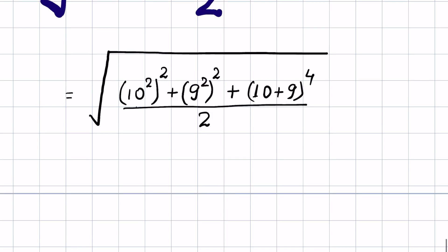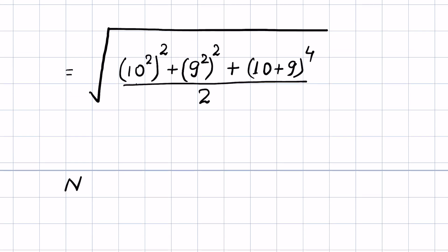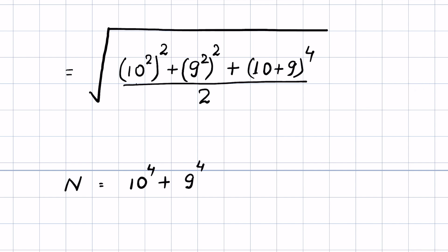Now let's first solve the numerator part. The numerator is 10 raised to the power 4 plus 9 raised to the power 4, because if (a raised to the power n) whole raised to the power n equals a raised to the power n times n. So using this identity we have 10 raised to the power 4 plus 9 raised to the power 4.